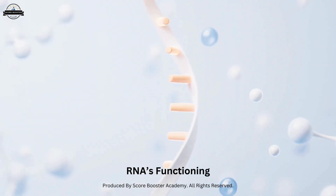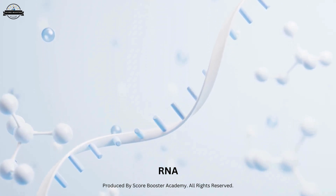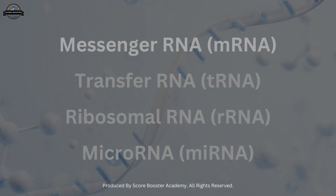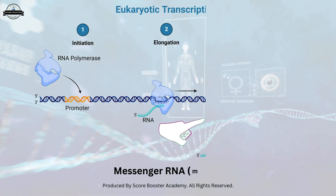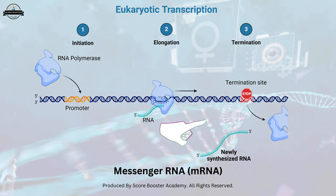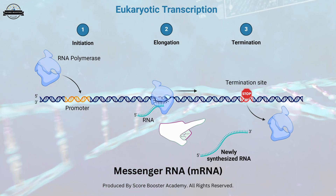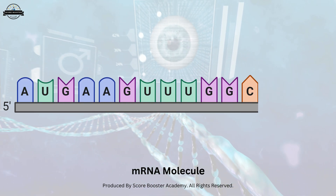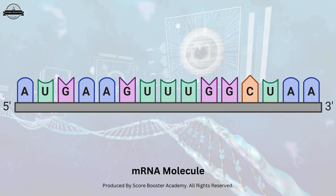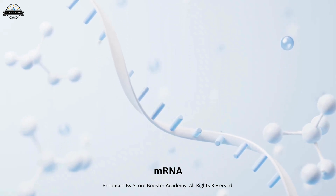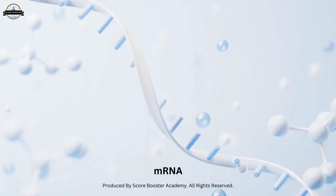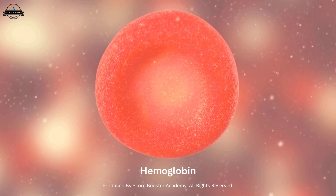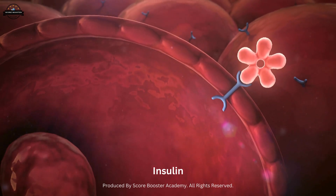There are several types of RNA, each with a unique structure and function. Let's delve into some of the most critical types. Messenger RNA, or mRNA, is synthesized from a DNA template during transcription. It carries genetic information from DNA to the ribosome, where it serves as a blueprint for protein synthesis. mRNA molecules are typically several thousand nucleotides long and composed of a single strand. The length and sequence of mRNA determine the specific protein produced. For instance, the mRNA for hemoglobin, the protein that carries oxygen in our blood, is distinct from the mRNA for insulin, a hormone that regulates blood sugar levels.